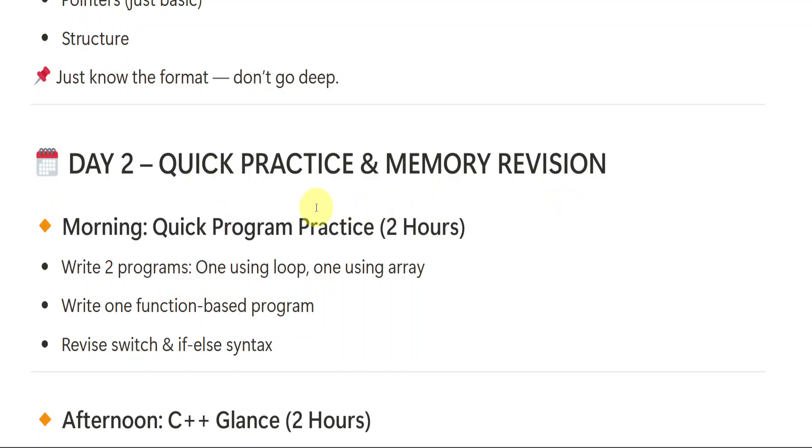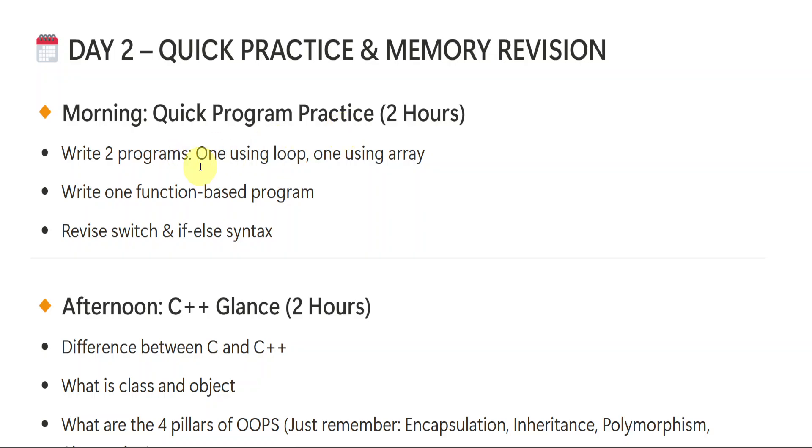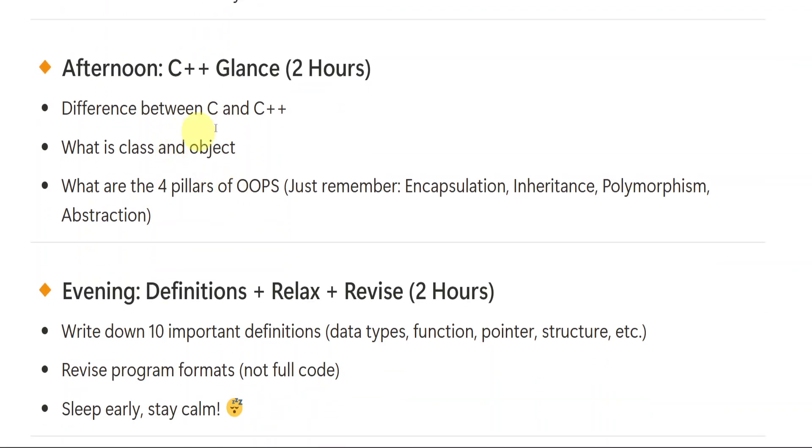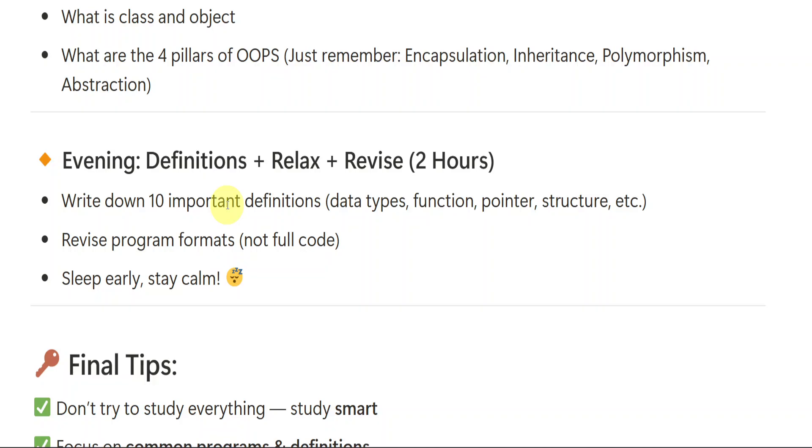Quick practice and memory revision - day two. On Sunday what you have to do, you have to go with the program practicing. Try to go with programs tomorrow also, that is on Saturday also. You just go with two to three problems if possible. Write two programs - one using loop, one using array. Write one function-based program also. Revise switch and if-else syntax. Then C++ glance - in unit 5, you just have a look. Already I have uploaded important questions, so from there you can have a look at what important questions are given in C++ unit 5.